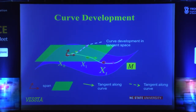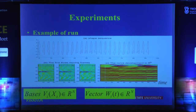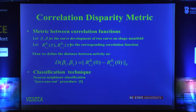That's the trajectory you get for any given process or activity. Here, we show an example of a run — these are all the shapes, this is the curve development, in other words all the coefficients. You can use these coefficients for classification because they capture the whole dynamics very accurately. We did a very simple thing: we just looked at the correlation.